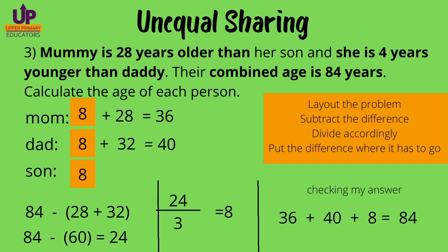Of course, we have to check our answer. We add the ages for mom, dad, and the son and make sure we get back the whole 84 years. And yes, 36 plus 40 plus 8 gives us 84 years, so our answer is correct.